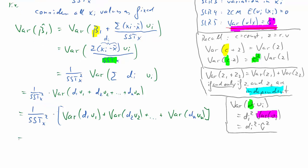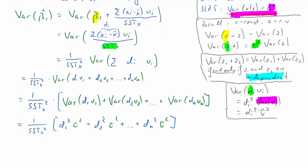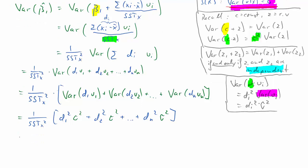Now we have n of these terms. So we can use that result. So we have 1 over sstx squared times, and now we have d1 squared times sigma squared plus d2 squared times sigma squared all the way to dn squared times sigma squared. And now this will simplify somewhat. We can basically factor out the sigma squared.